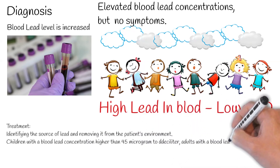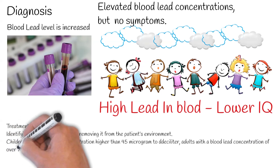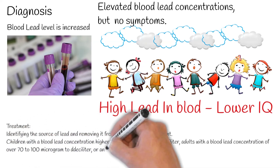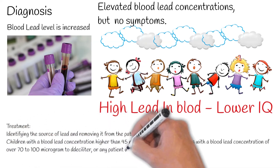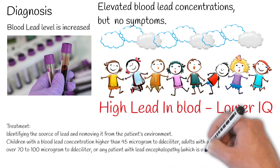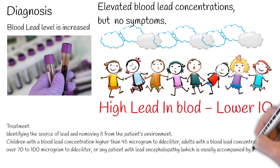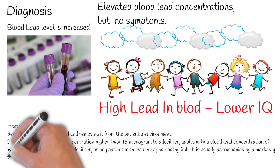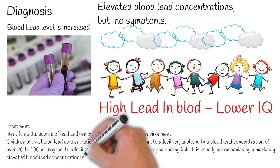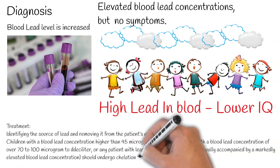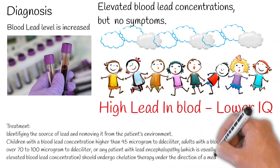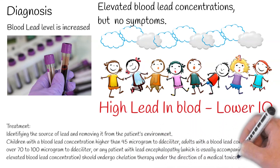Children with a blood lead concentration higher than 45 micrograms per deciliter, adults with a blood lead concentration over 70 to 100 micrograms per deciliter, or any patient with lead encephalopathy — which is usually accompanied by a markedly elevated blood lead concentration — should undergo chelation therapy under the direction of a medical toxicologist.